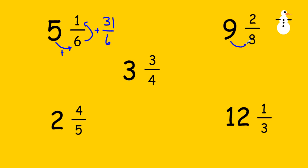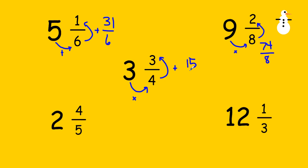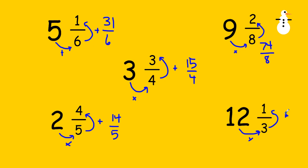Next one: nine times eight is seventy-two, plus two is seventy-four eighths. You probably noticed that two eighths could be simplified into one fourth, so this number could also be simplified. Continuing: three times four is twelve, plus three is fifteen fourths — that's our improper fraction. Next: two times five is ten, plus four is fourteen fifths. And the last one: twelve times three is thirty-six, plus one is thirty-seven thirds.